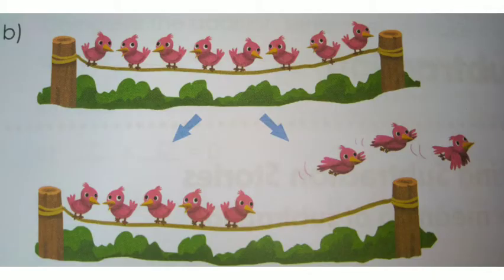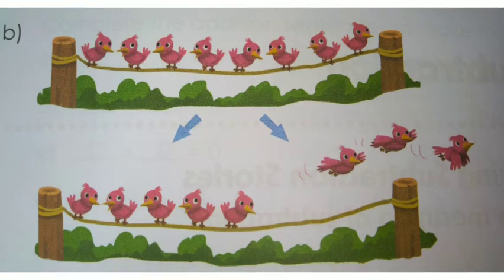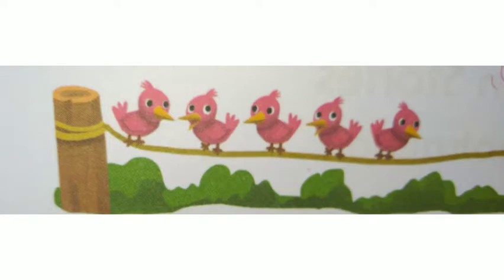Look at the next image. 8 birds are sitting on the rope. Listen carefully. 8 birds are sitting on the first rope. From that, 3 birds fly away. 3 birds fly away from the rope. After 3 birds fly away, remaining how many birds are there sitting on the rope?